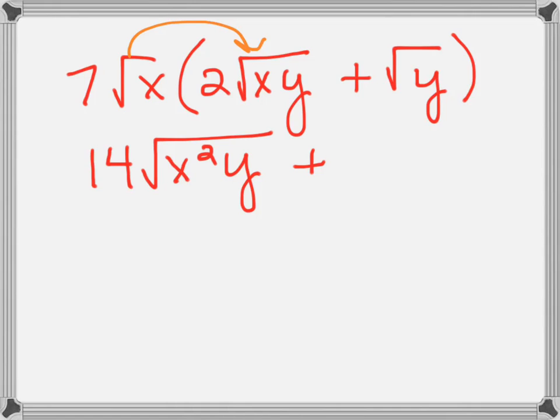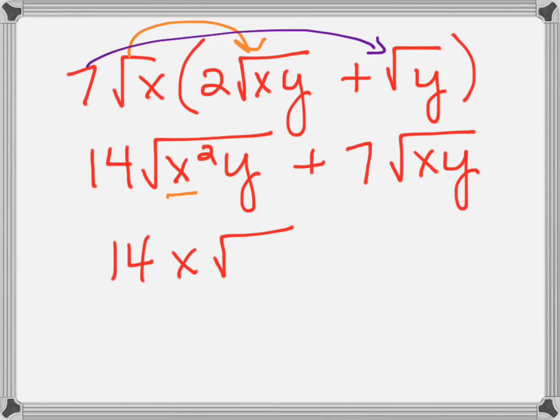Then we're going to go to the next term and distribute 7 square roots of x to the square root of y, which gives us 7 square roots of xy. Simplifying any term under the radical, in the first term we're going to get 14, but we're going to get rid of the square root of x squared because we know that is x, so we get 14x square roots of y plus 7 square roots of xy because we cannot simplify any term under that radical.